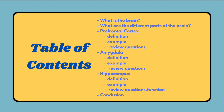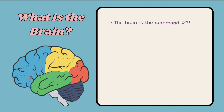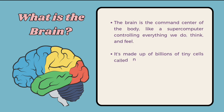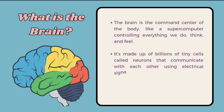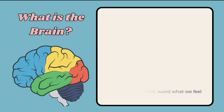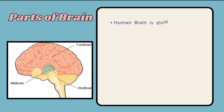What is the brain? The brain is the command center of the body, like a supercomputer controlling everything we do, think, and feel. It's made up of billions of tiny cells called neurons that communicate with each other using electrical signals. The brain is responsible for who we are, how we think, and what we feel. It is the complex organ that controls our thoughts, memory, and emotions.